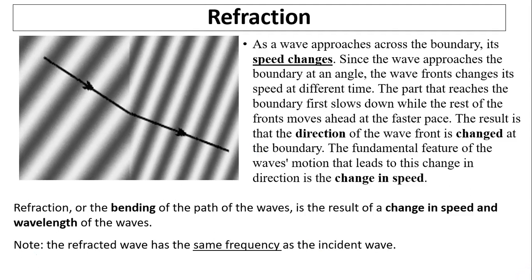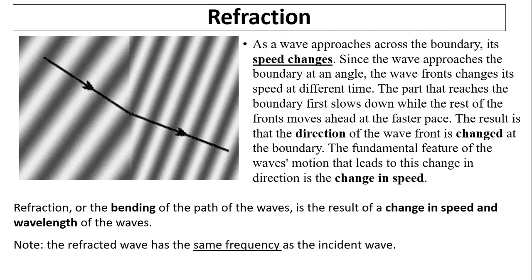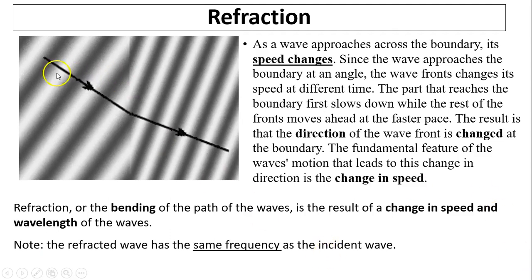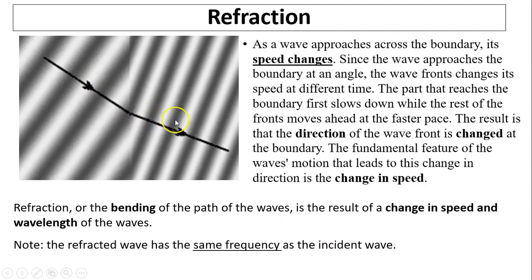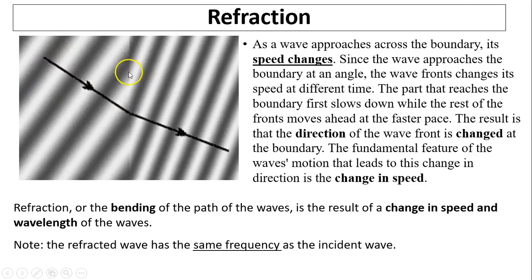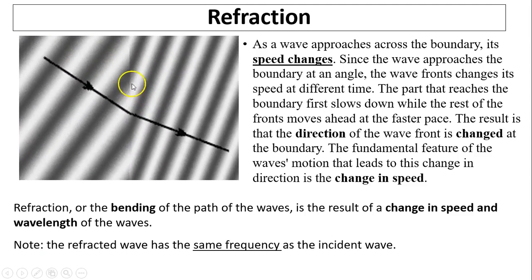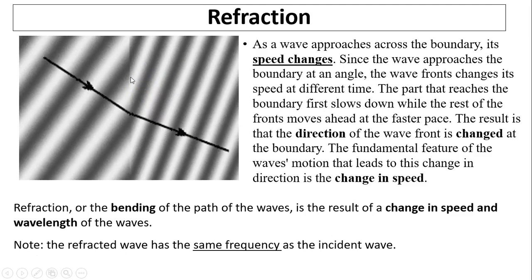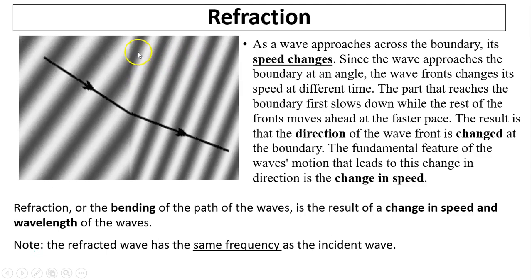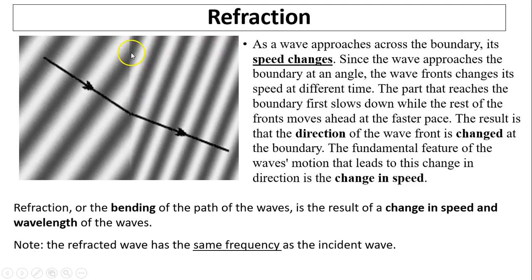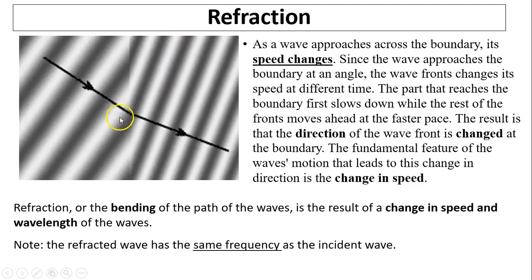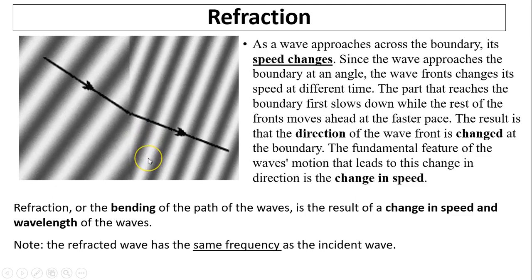What's refraction? Refraction is a bending of the path of the wave. As you can see, the rays have changed direction — the rays have bent. The wave comes to the boundary, and the wave first encountering the boundary will change its speed. If you're coming from a less dense to a denser medium, the wave is going to travel slower. As part of the wave travels slower, the other part still has the same speed, and that's the reason why the wave bends.